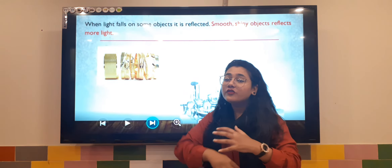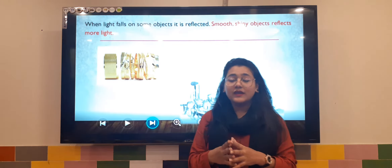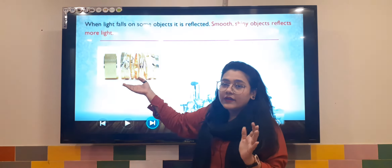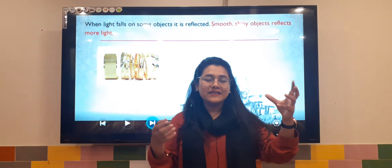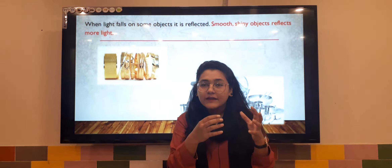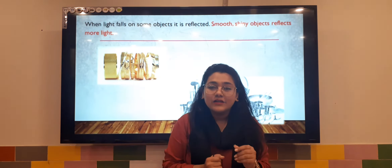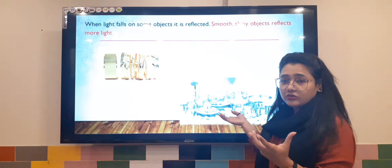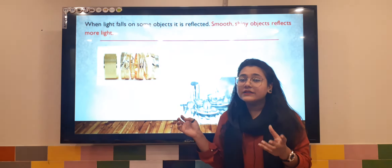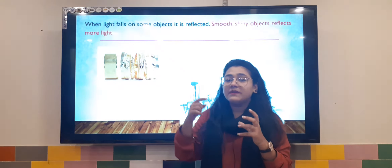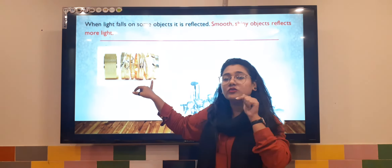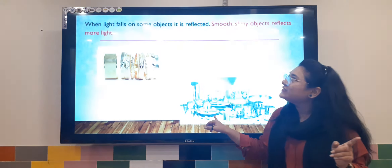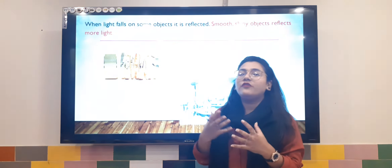Then there are objects from which light reflects back. Many objects cause light to strike them and reflect away. Like gold — when you place gold in front of a light, it starts to shine because it is reflecting the light rays. Steel utensils also reflect light. When light rays strike them, they reflect the rays in another direction. So these are the objects that form reflected light.